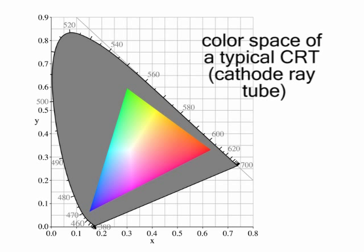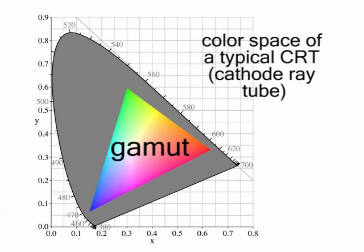Notice that the three points of the triangle are pure blue, pure red, and pure green. These three points create the boundaries for a subset of colors called a gamut.